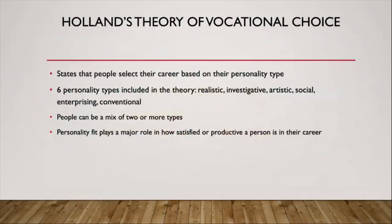The third and final theory is Holland's theory of vocational choice. This theory states that people select careers based on their specific personality type or personality types. There are a total of six personality types included in this theory: realistic, investigative, artistic, social, enterprising, and conventional. As with the other theories, you can mix and match the different types — you may experience things at a certain point and then move into a different personality type.